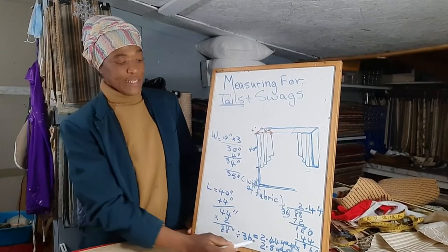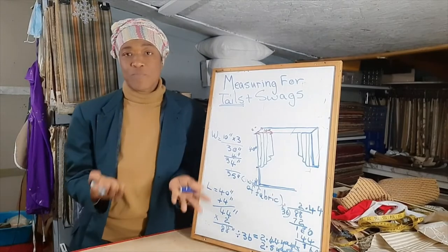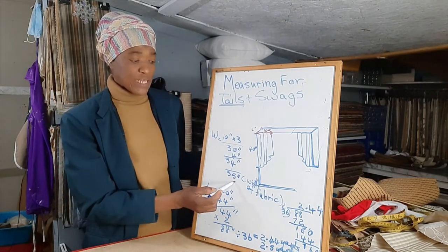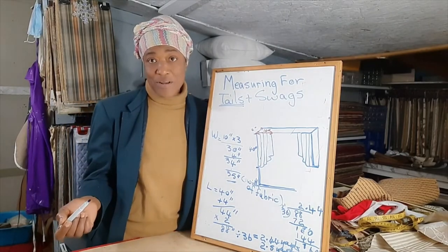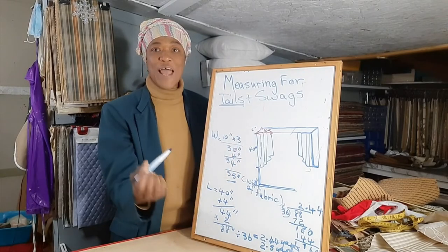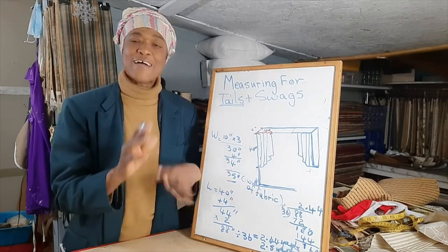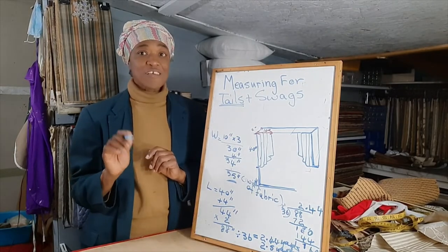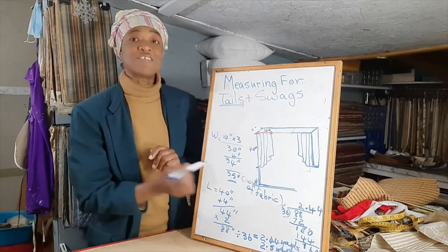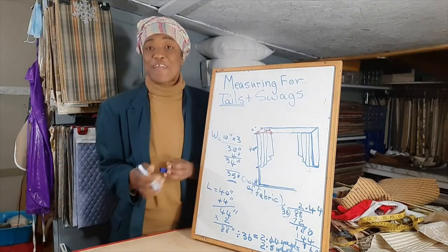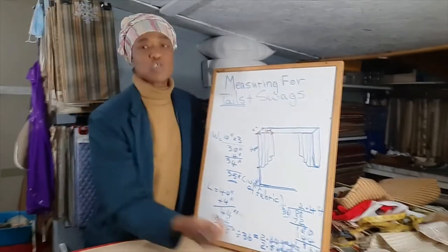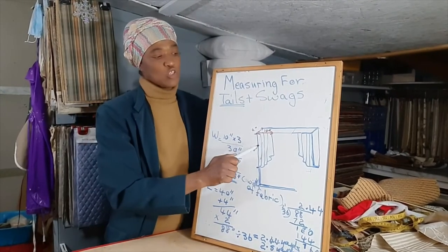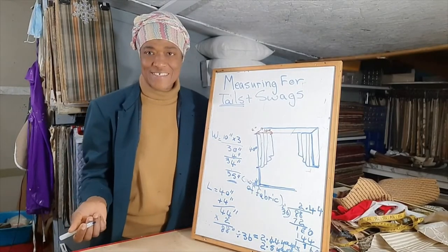So we will need 2.5 yards of 54-inch-wide fabric to make two tails. The width we need is 35 inches, so if you can find a fabric you like that's only 36 inches wide, you could actually get away with that. Otherwise, we need 2.5 yards of 54-inch-wide fabric to make our two tails.